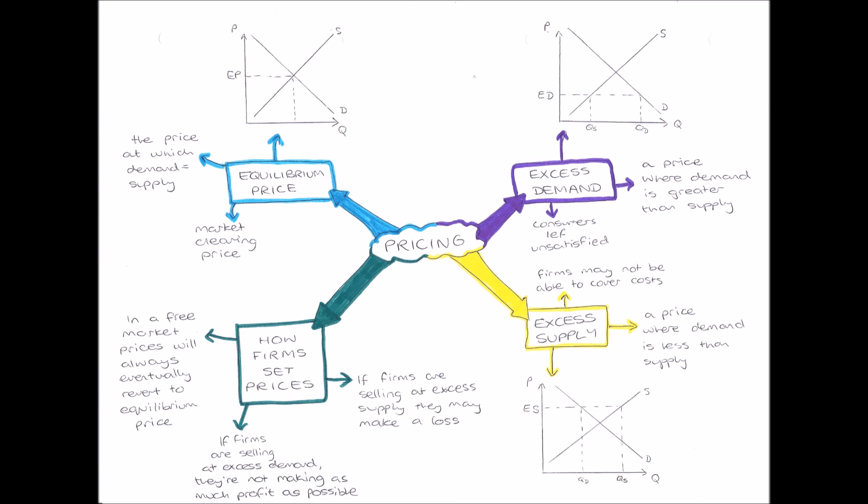This is where consumers are left unsatisfied. If there is demand for 200 goods but only 30 are available, that means 170 consumers are left unhappy because they haven't got their good. So consumers are left unsatisfied.